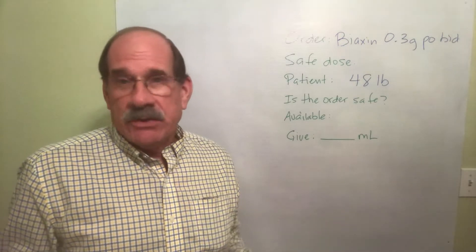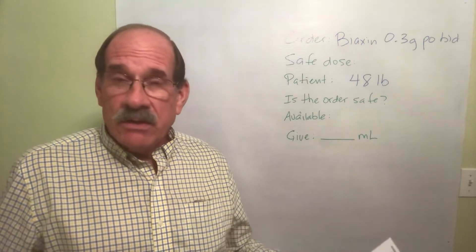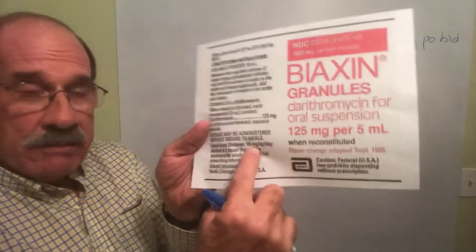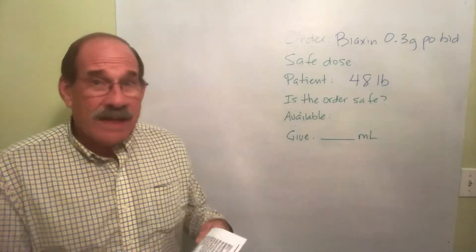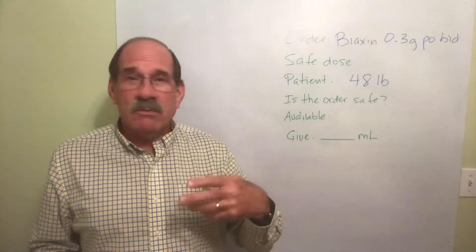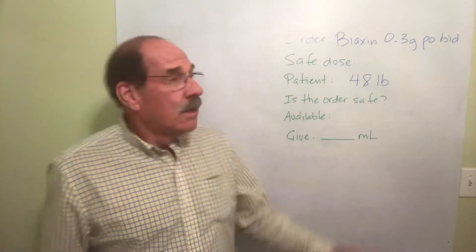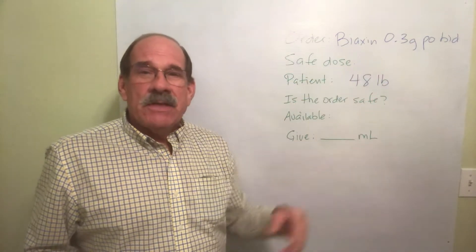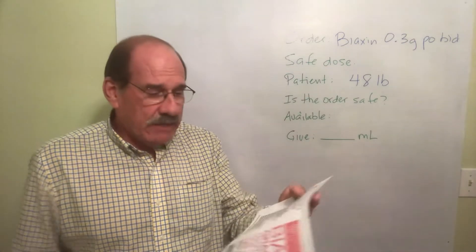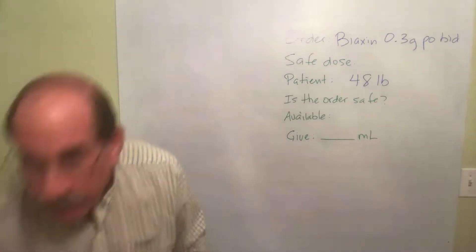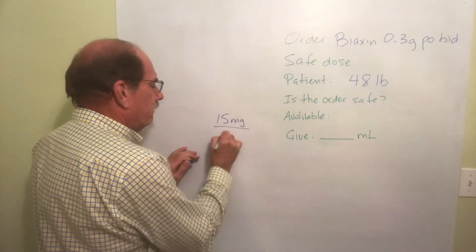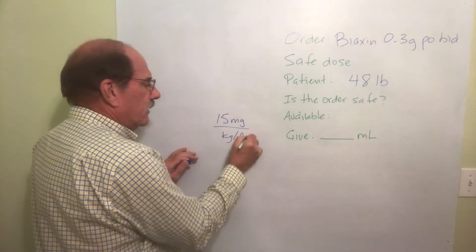It may say typical dose, normal dose, or safe dose — that all means the same thing. The usual dose for children is 15 milligrams per kilogram per day. Again, what we're doing here — if you watched the previous videos — that's our order, but we need to see if this order is safe. So we take what the drug company themselves says: 15 milligrams per kilogram per day.